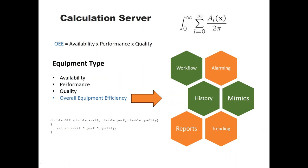We also have a calculation server for analytics. We have a number of pre-canned calculations, and you can write your own with a little bit of .NET code. You could create a type with four properties, use three as inputs into your calculation, and have the output go into the fourth property. That fourth property can then be used in alarming, mimics, trending, workflow, or reports — so you can build very sophisticated analytics equations within the system.